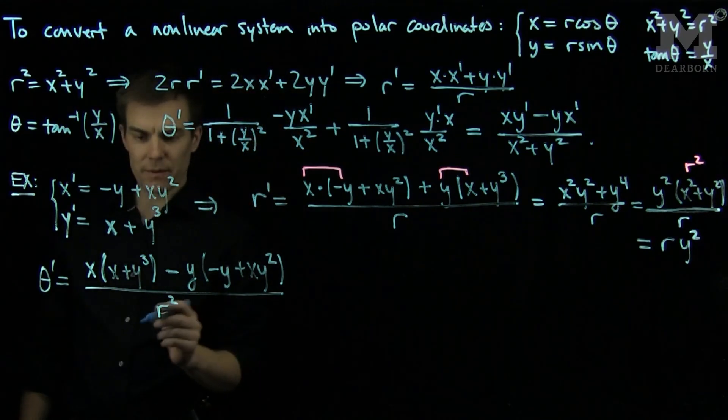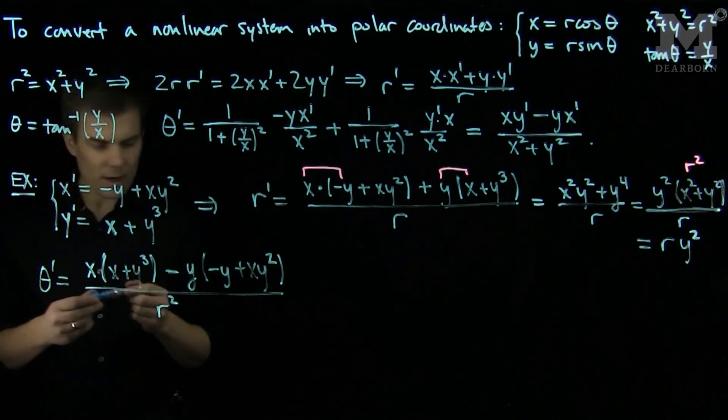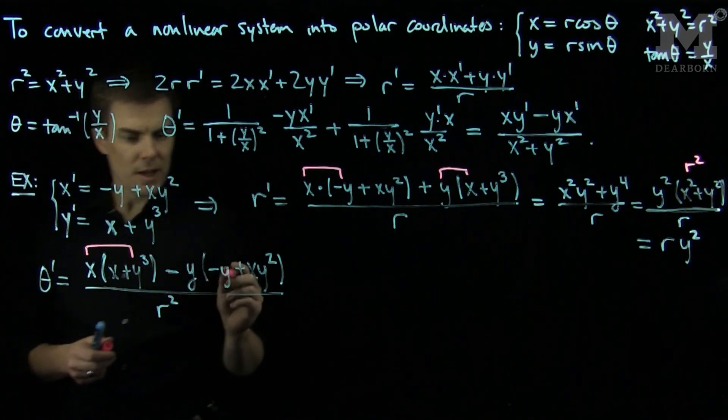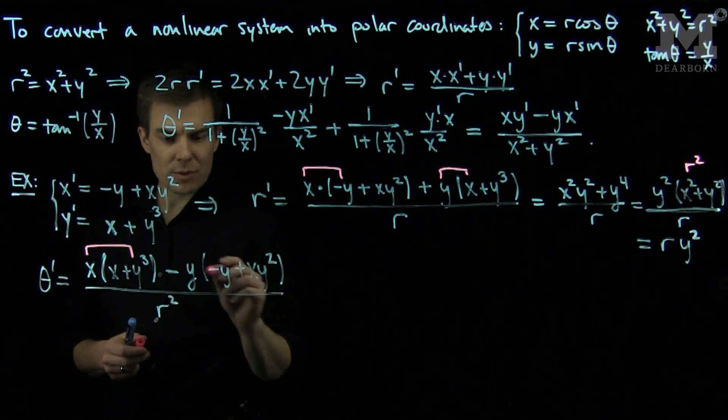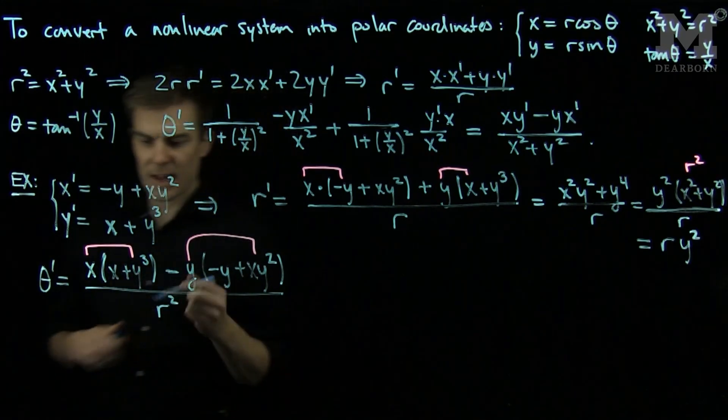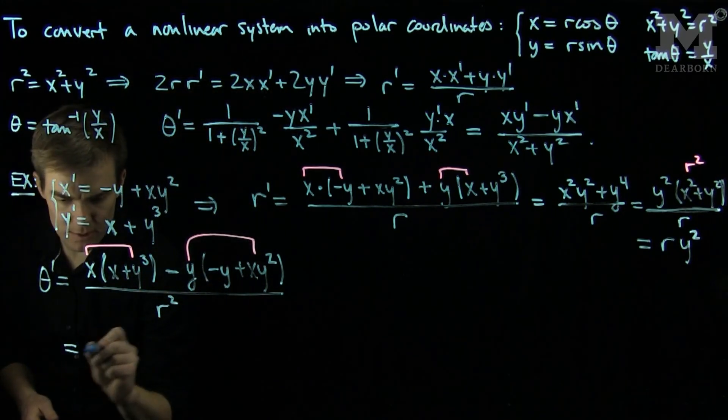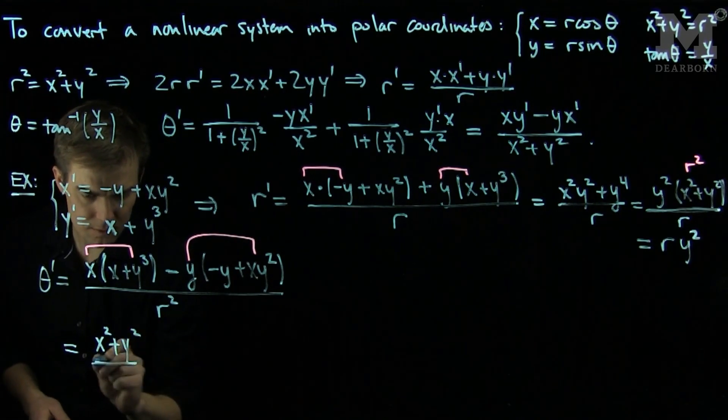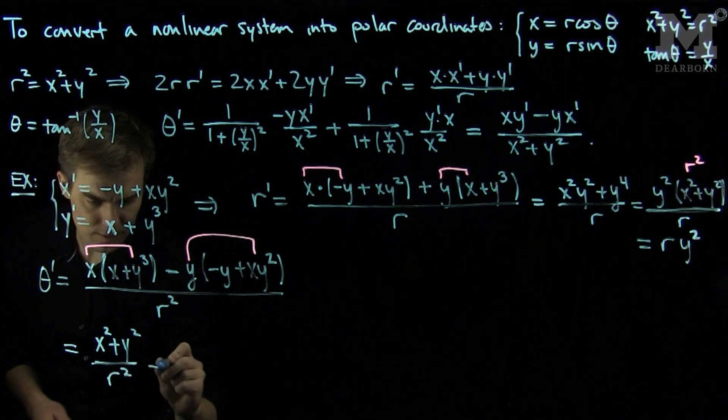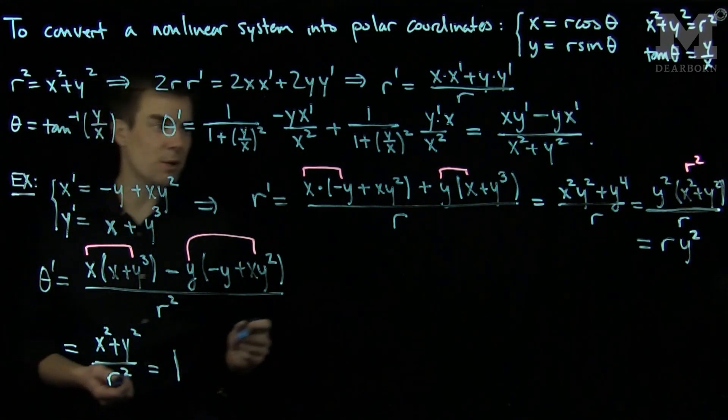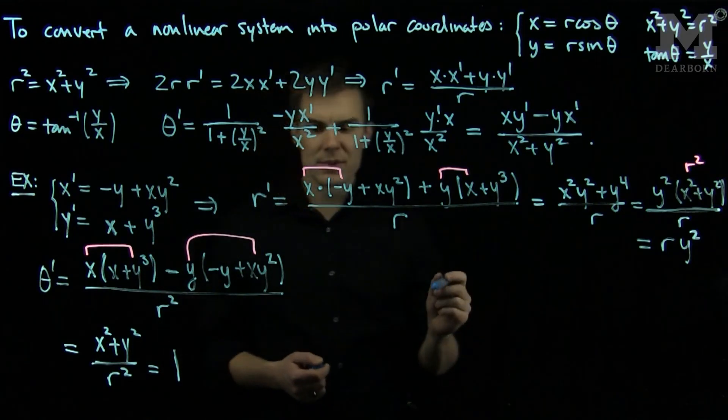We can simplify this. The x y cubed terms will cancel, and I will just have x squared plus y squared on top over r squared. Since x squared plus y squared is r squared, theta prime is equal to one.